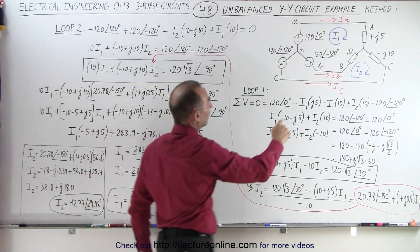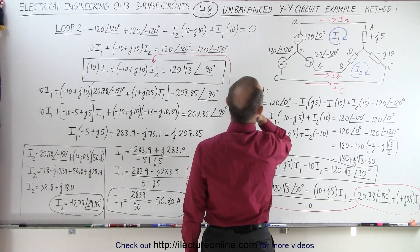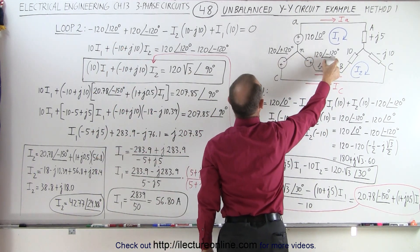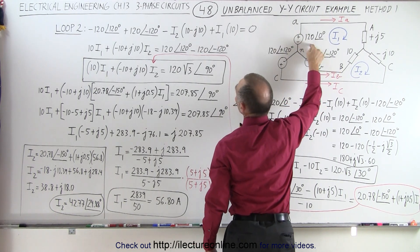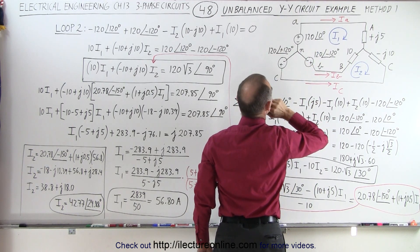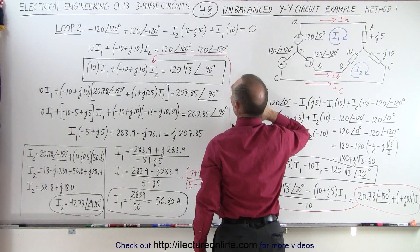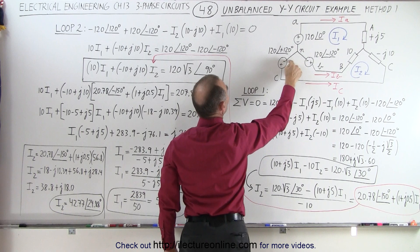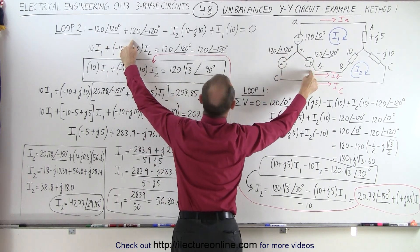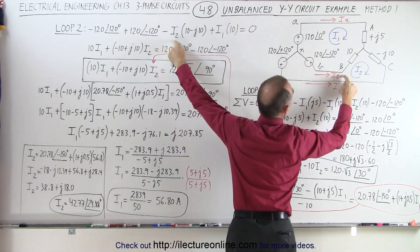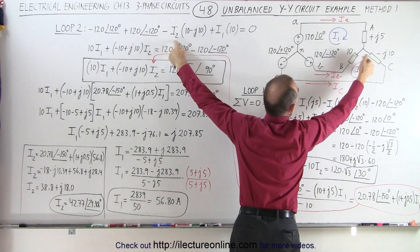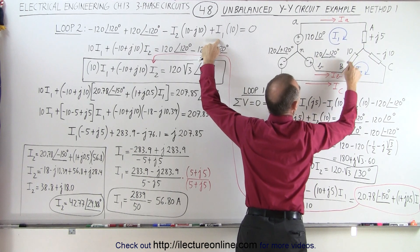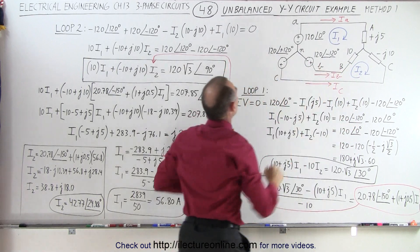Next, we do loop 2, going around starting at point C. We have a minus 120 volt drop with a phase angle of 120, and a plus 120 volt rise with a phase angle of minus 120. Then we have I2 with a voltage drop across the impedances because of I2, so minus I2 times 10 minus J10. Then we have a voltage rise because I1 goes this way, so I1 times a positive 10 for the voltage rise. Adding up all the voltages, we get zero.